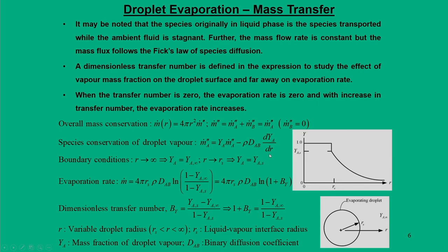Looking at droplet evaporation through mass transfer, the initial concentration inside the droplet is Ys — typically the maximum at the surface. Rs is the radius at maximum size at the surface. At the surface the concentration is initially at Ys, and as the radius increases outward this concentration drops, meaning there is diffusion of the droplet species into the medium.